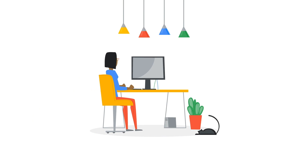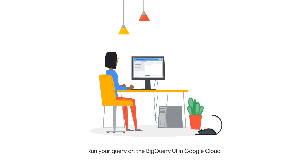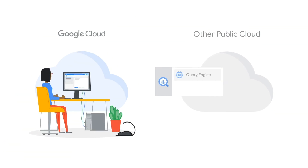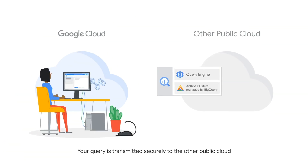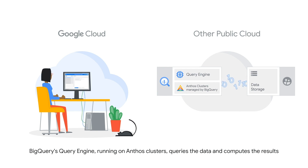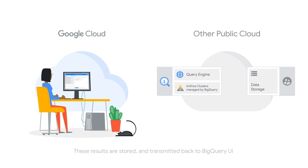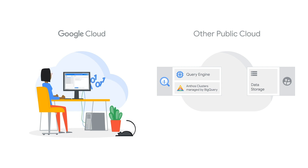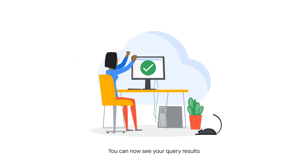Let's get started with BigQuery Omni. In the BigQuery UI on Google Cloud, choose the public cloud region where your data is located and run your query — the same query you would use to work with data stored on GCP. The query is passed to the other public cloud, and all of the compute is done within that public cloud region. The results are returned to the BigQuery UI, or you can choose to export the results directly back to your data storage on that public cloud, which means there is no cross-cloud movement of results or data.